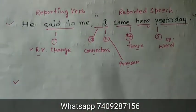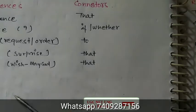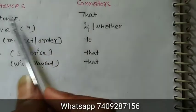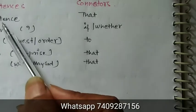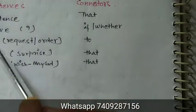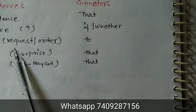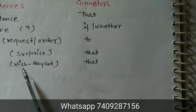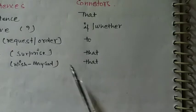In this video I will show you all these charts for changing from direct to indirect speech. First, the types of sentences you should remember: simple sentence, interrogative sentence, imperative sentence, exclamatory sentence, and optative sentence. Interrogatives are question sentences where we ask questions. Imperative sentences are about request and order. Exclamatory sentences show surprise. Optative sentences are about expressing a wish, where we usually use phrases like 'May God bless you.'